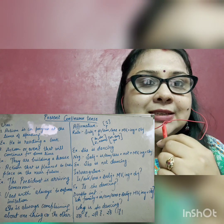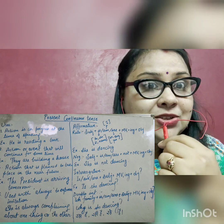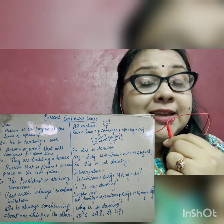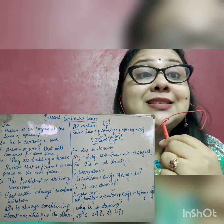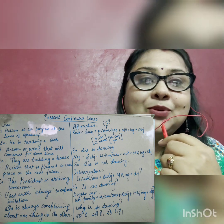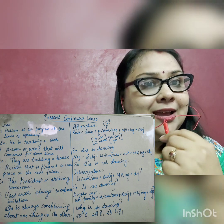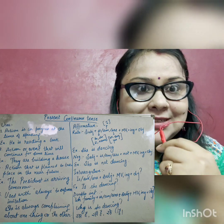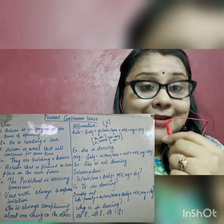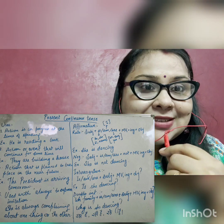For example: 'He is reading a book.' He is the subject, is is the helping verb, reading is the main verb's first form plus ING, and book is the object. Another example: 'I am teaching you.' I is the subject, am is the helping verb, teaching is the main verb plus ING, and you is the object.